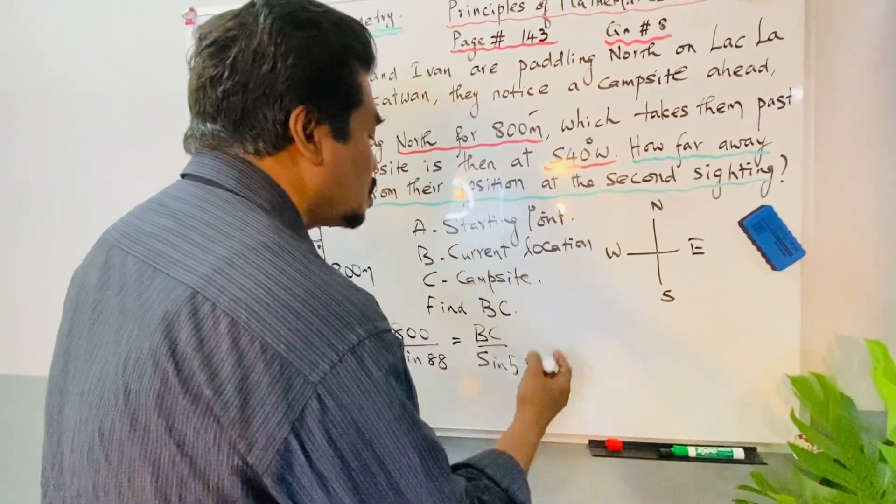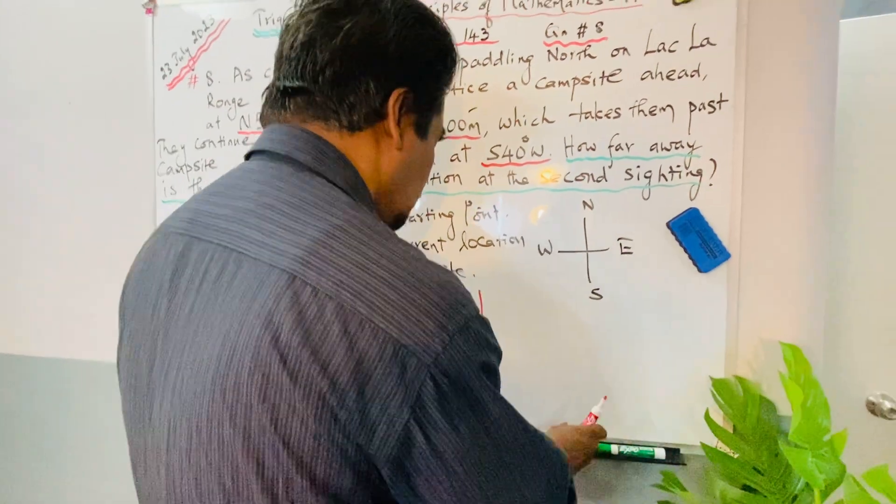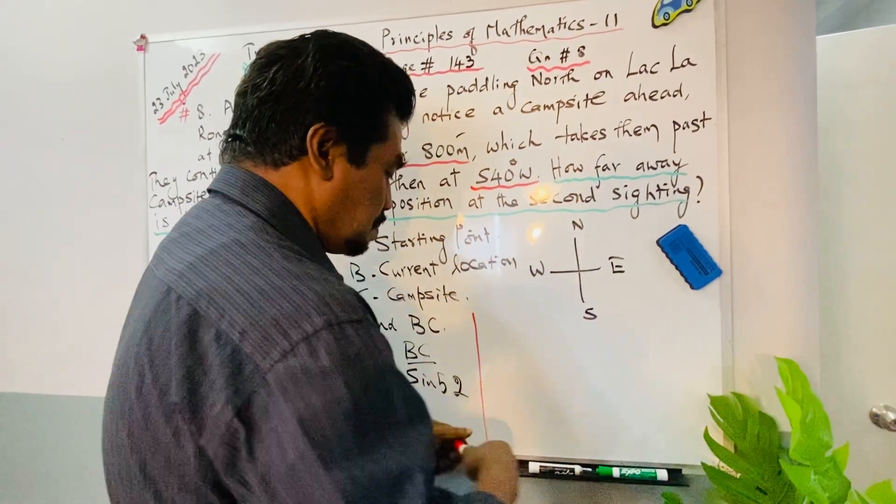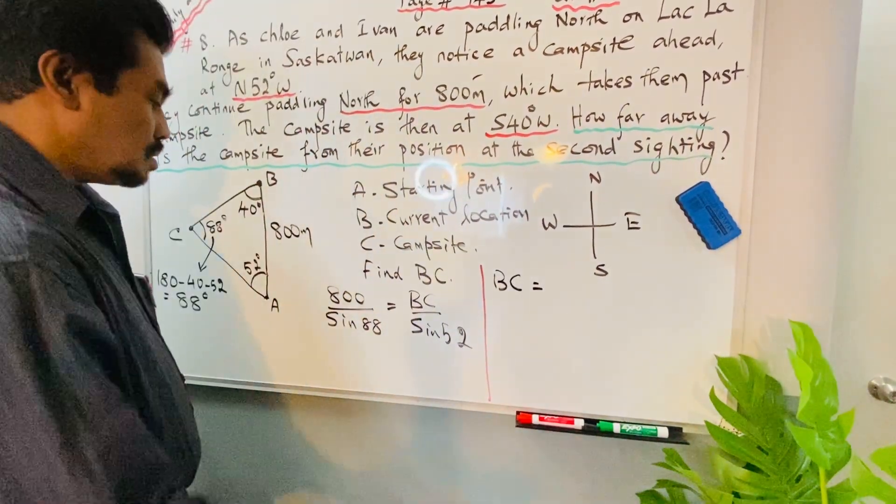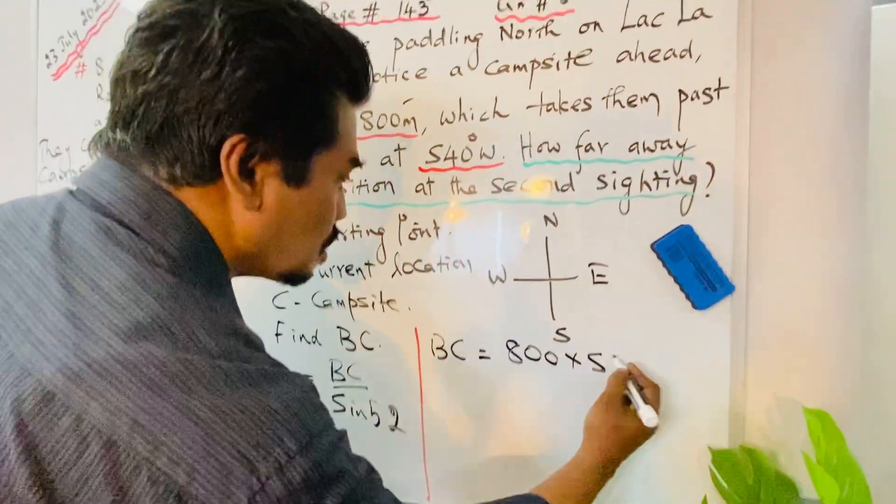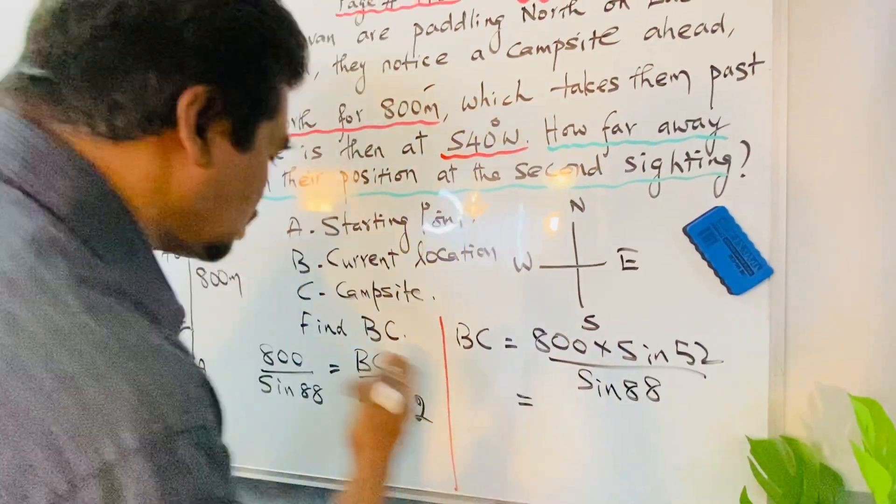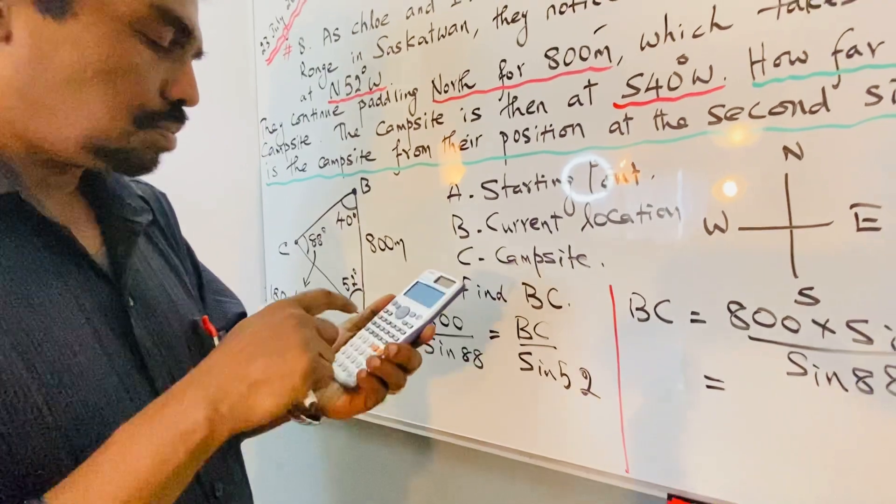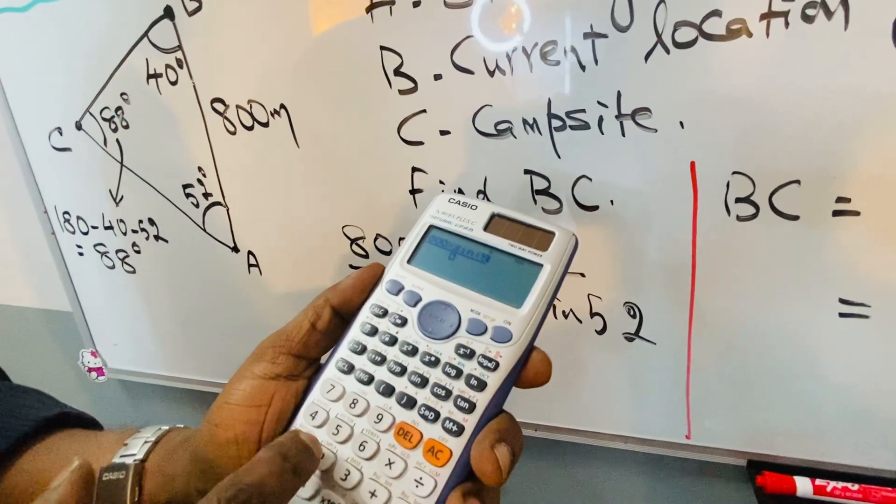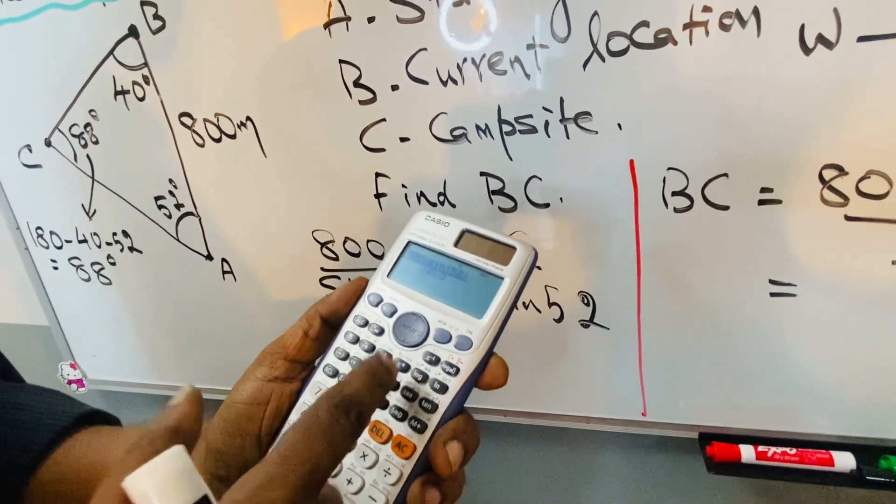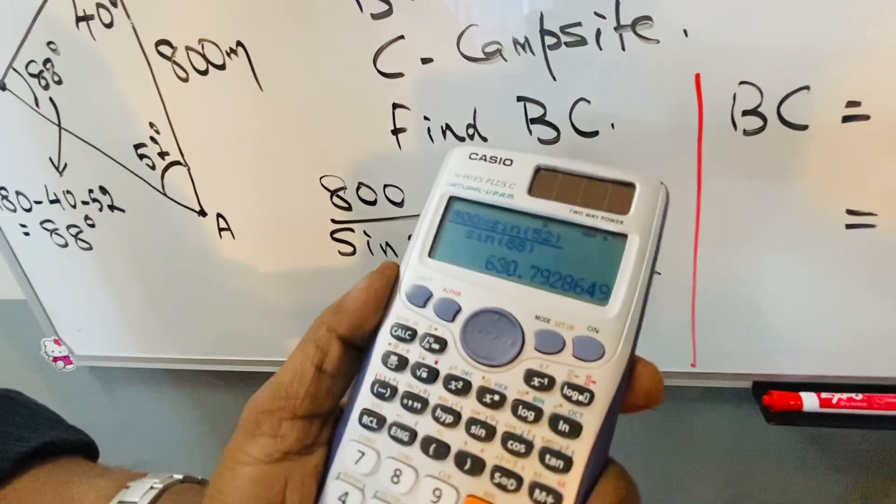We can use the scientific calculator so it will be easy for students to understand. BC can be calculated by 800 times sine 52 over sine 88. We can use the scientific calculator: 800 times sine 52 over sine 88.